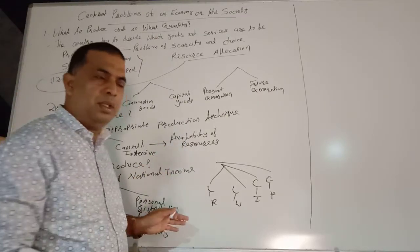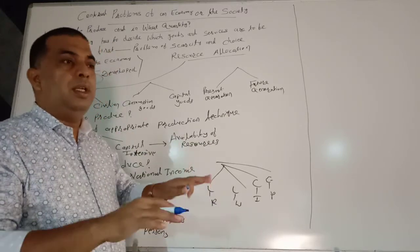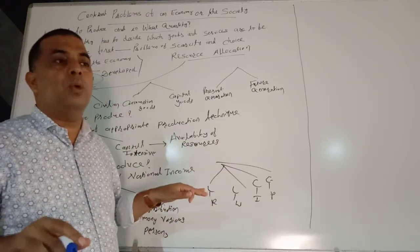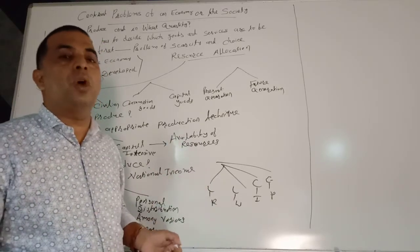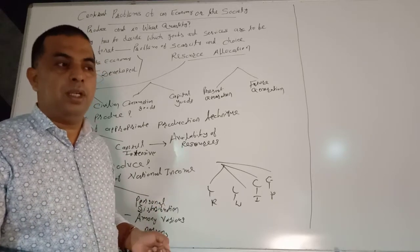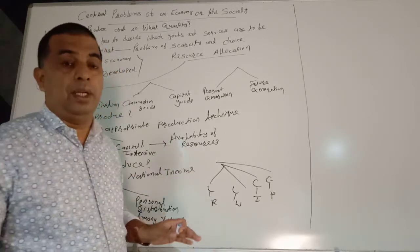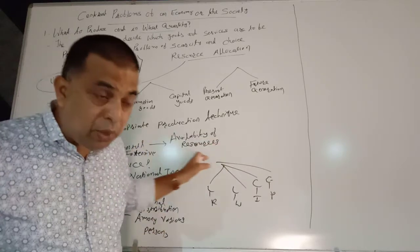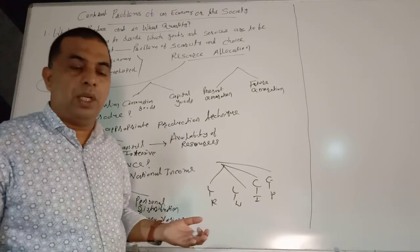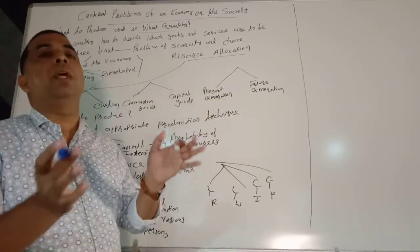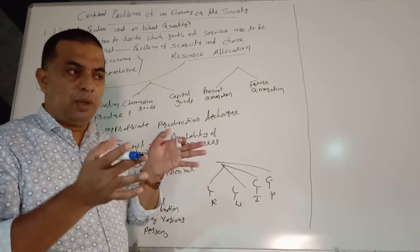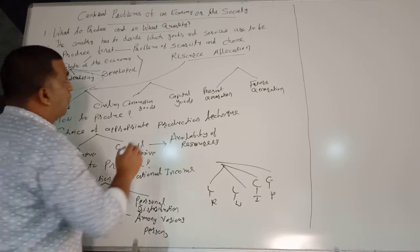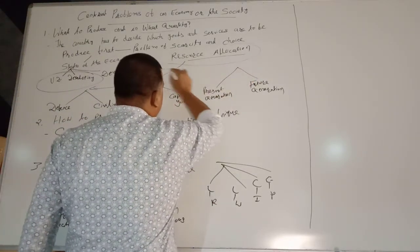The country has to decide the quantities. It doesn't mean that we should not produce other commodities. The country has to decide: how much wheat is to be produced? How much rice is to be produced? How many meters of cloth has to be produced? How many kilowatts of power has to be generated, etc. The quantity has to be decided. This first problem is also associated with the problem of resource allocation.